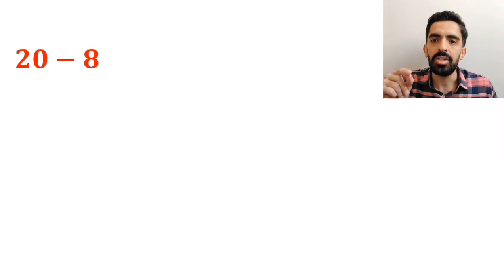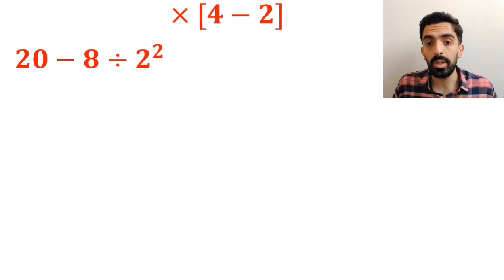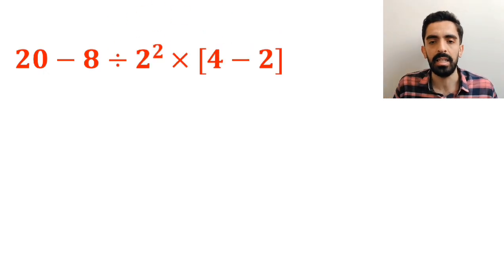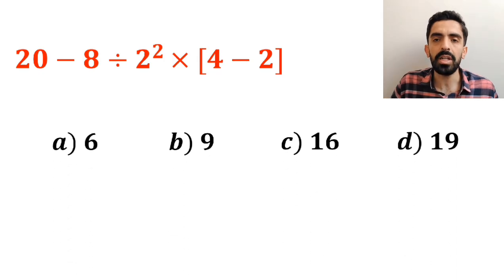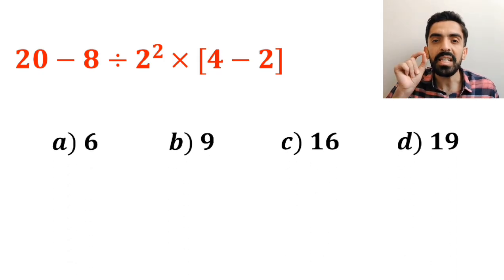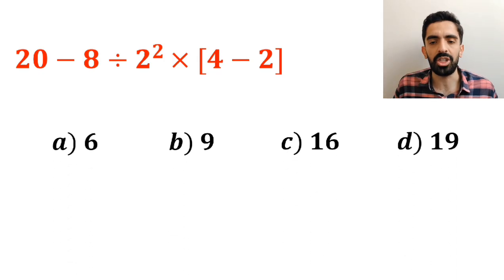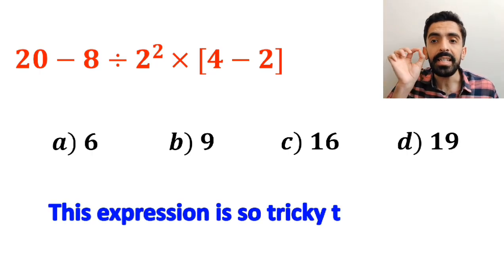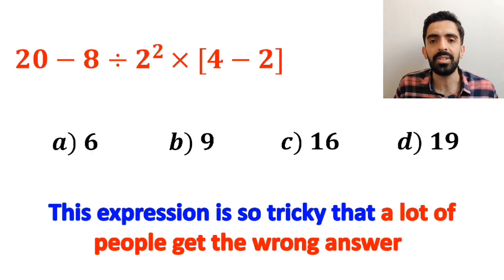As you can see on the screen, in this question, we have an expression that says 20 minus 8 divided by 2 squared multiplied by open bracket 4 minus 2 close bracket. The options for this question are as follows. Which one do you think is the correct answer? This expression is so tricky that a lot of people get the wrong answer.